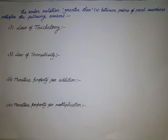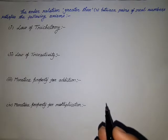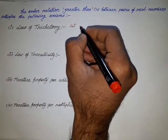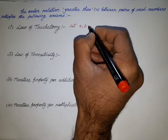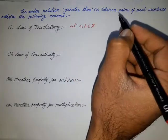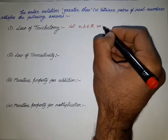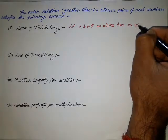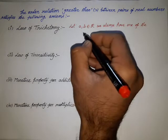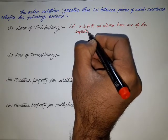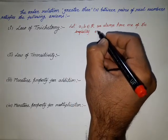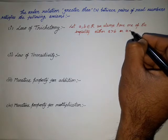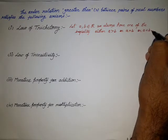The first rule is the Law of Trichotomy. The Law of Trichotomy says that for any two real distinct numbers — let a and b belong to the set of real numbers — we always have one of the following inequalities: either a is greater than b, or a is equal to b, or a is less than b.